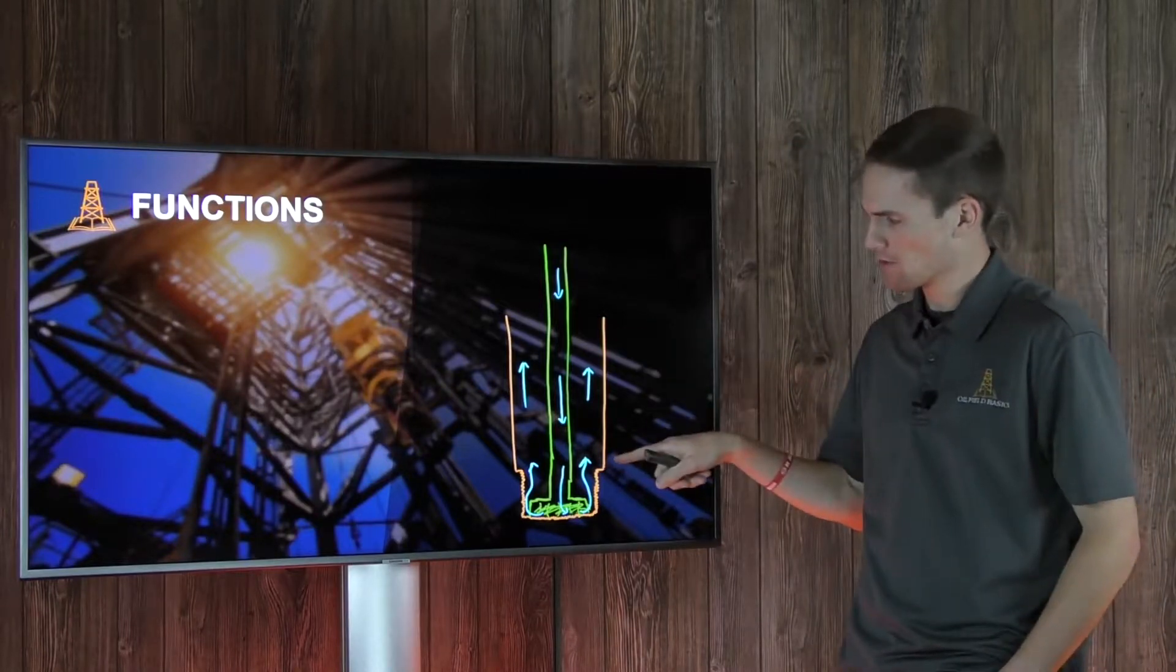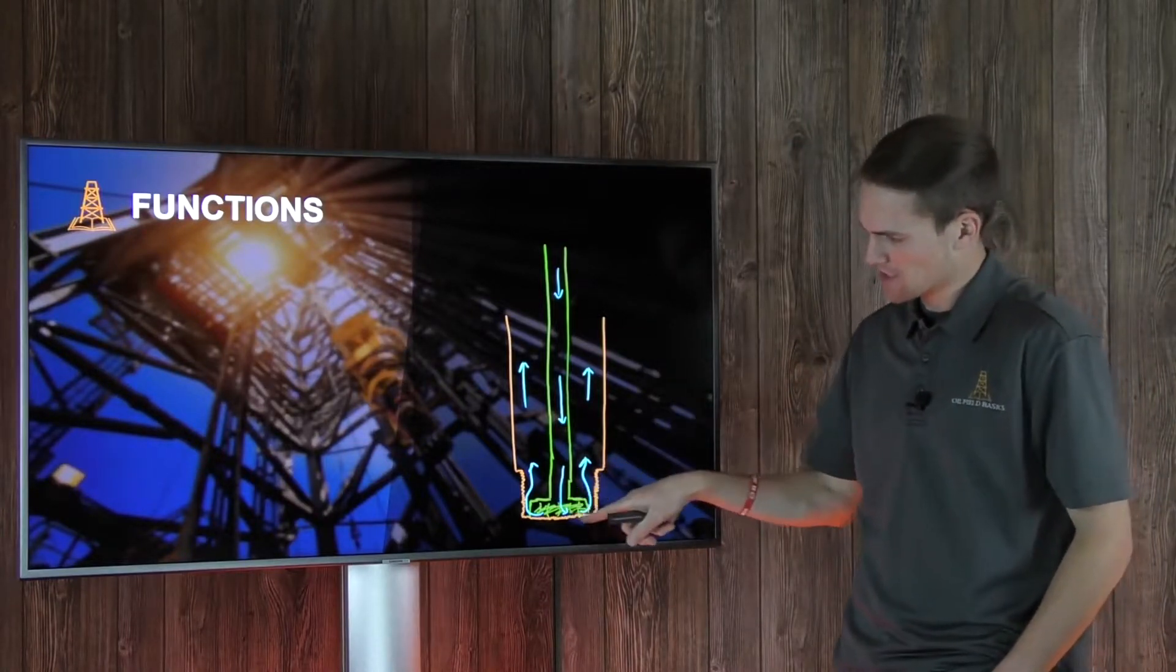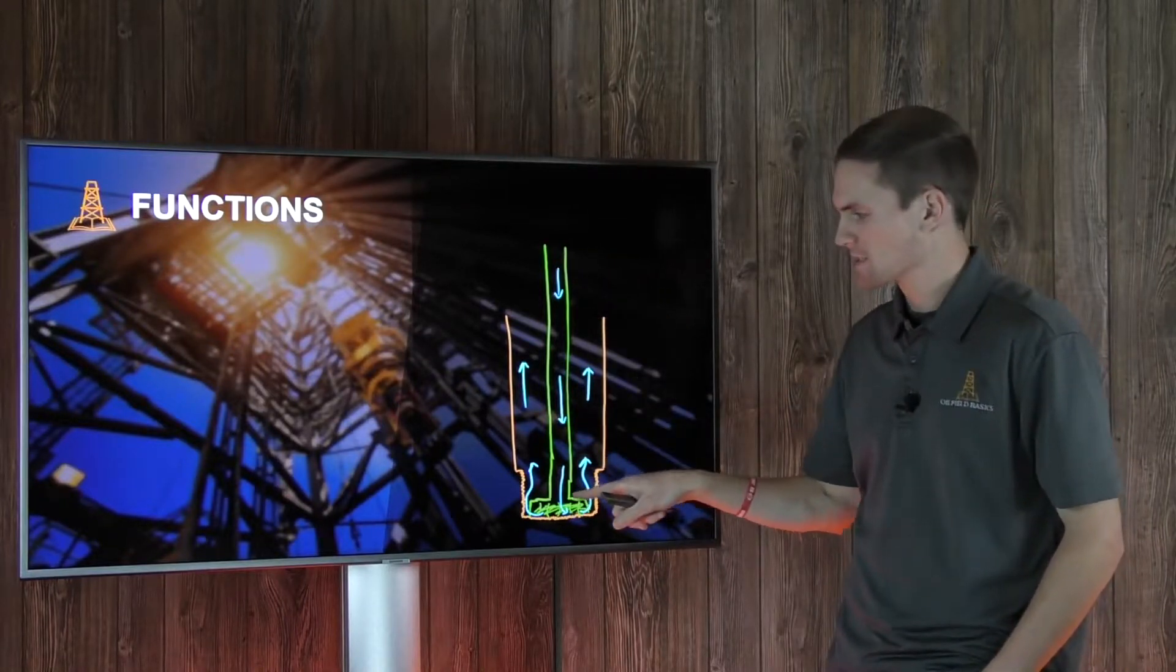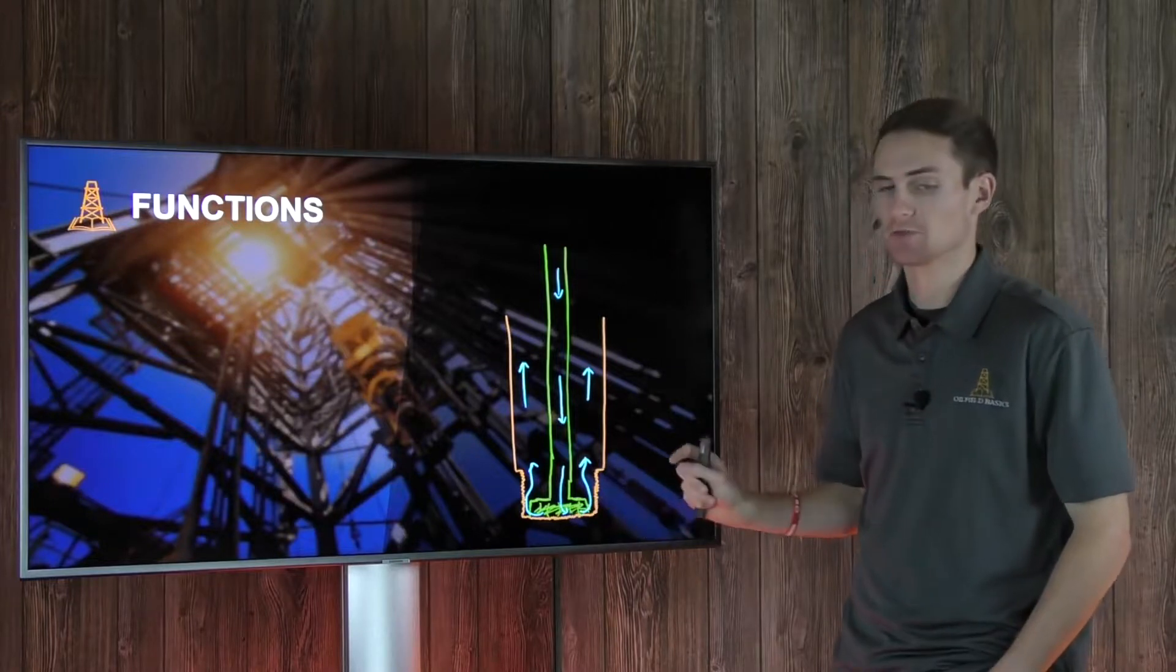So here we have cased hole that we've already drilled, and then our drill bit down here, that's the green, and then our drill string heading towards surface where it's connected to the rig. You can see where our drill bit is on bottom when we're drilling a section of open hole.